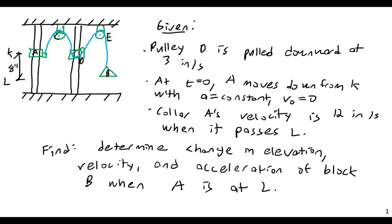I have a list of steps to go through. First, I'll define the origin as the upper horizontal surface, letting zero height be at the ceiling with positive displacement downward. Second, I'll treat collar A as having uniform acceleration rectilinear motion and solve for its acceleration and the time T needed to reach L. Third, pulley D has uniform rectilinear motion, so I'll calculate its change in position at time T. Fourth, block B's motion is dependent on A and D, and I'll write relationships between them and work through the math.